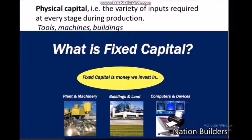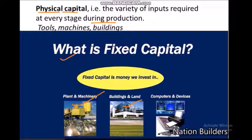The next factor is physical capital. For production, capital is needed. The variety of inputs required at every stage during production is the physical capital. In physical capital, fixed capital is included. Fixed capital is money invested in plant and machinery, buildings, land, computers, and devices. For farmers also, fixed capital applies.